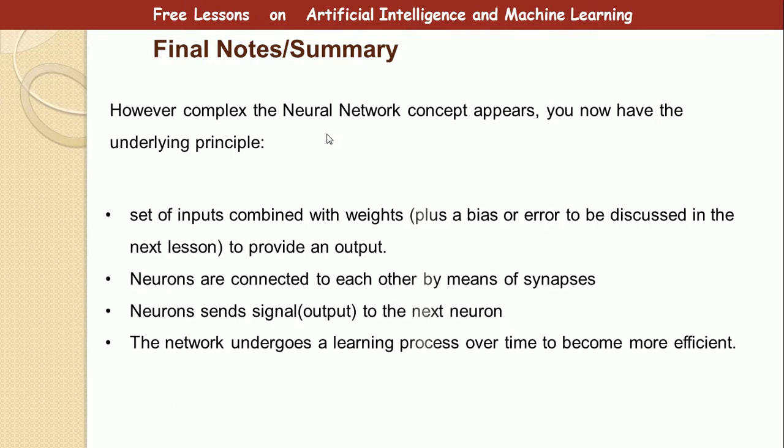So, let's summarize what we've learned so far. We've learned that a set of input combined with weight plus a bias provides an output of the neural network. Neurons are connected by each other by means of a synapse. Neurons send signals to the next neuron and the neuron propagates signal from the input through hidden layers all the way to the output.